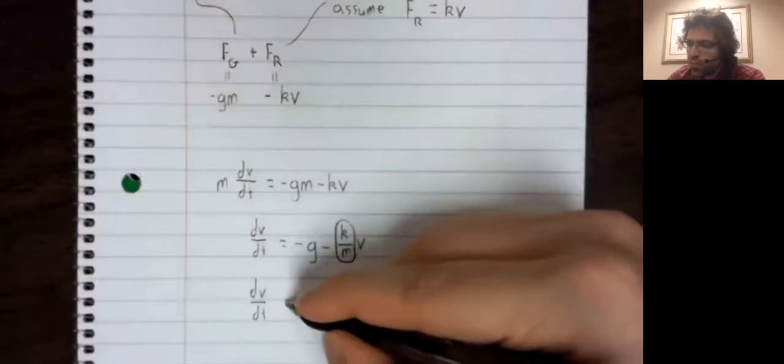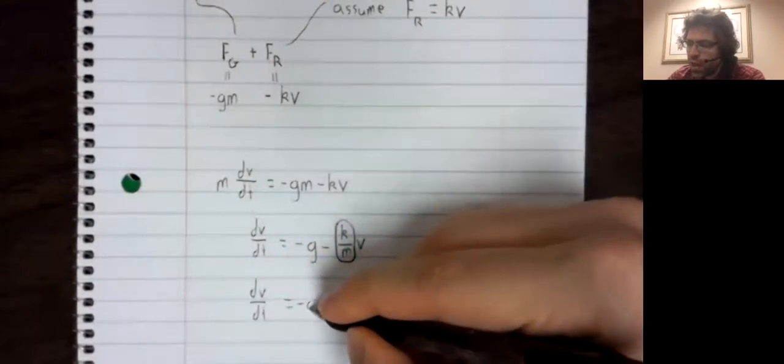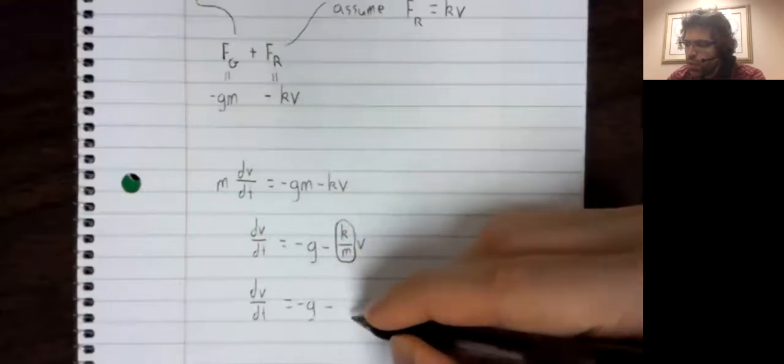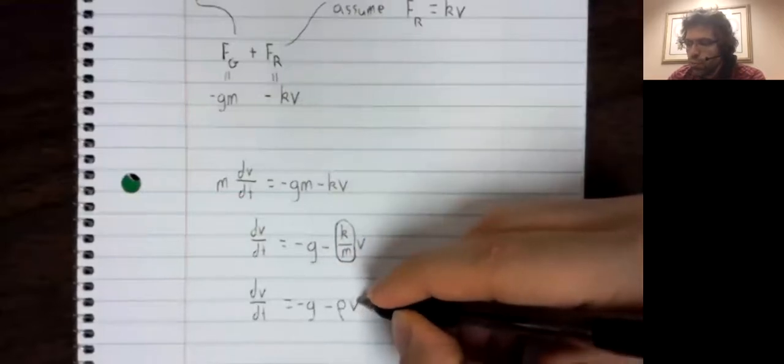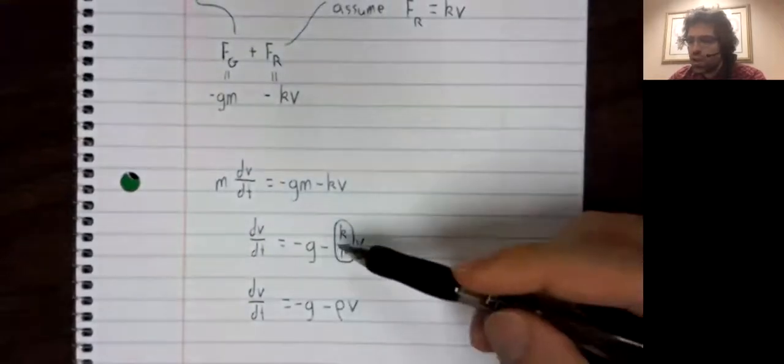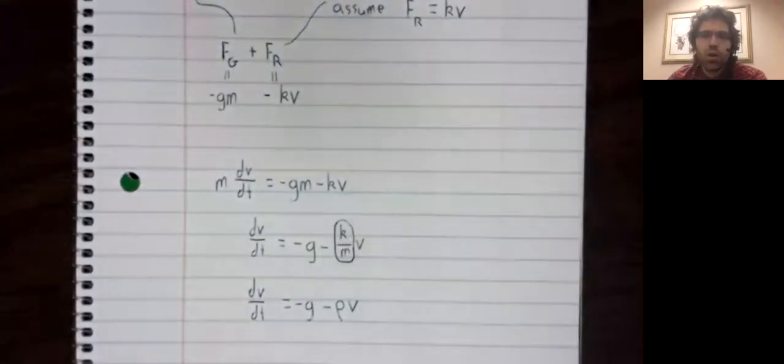So let's rewrite this one final time. We'll use the Greek letter rho for this constant called the drag coefficient.